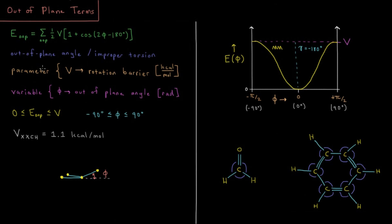We have a parameter in there, which is the rotation barrier, the maximum height of how high the energy will go if this out-of-plane angle goes all the way perpendicular up to 90 or negative 90 degrees. And we have our variable, the out-of-plane angle phi, which most typically would be in radians. So if I add this 180 degrees in radians instead, that would be negative pi.